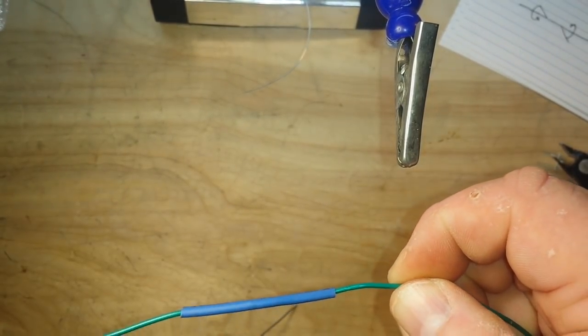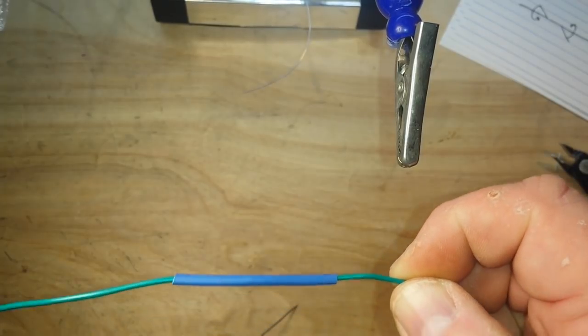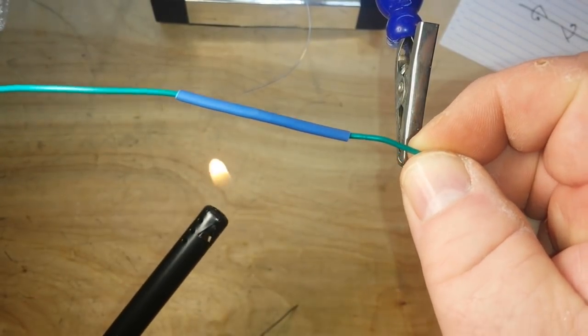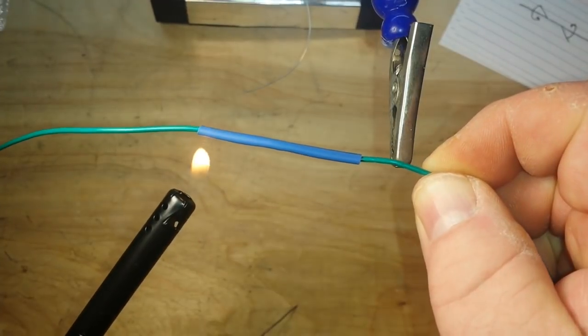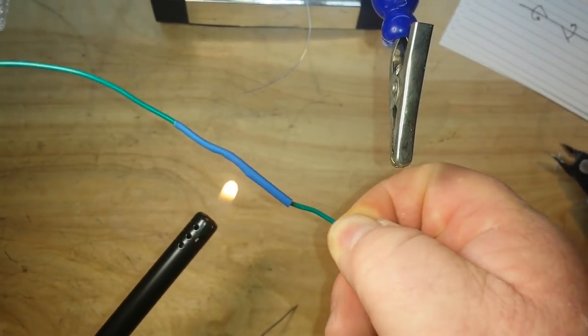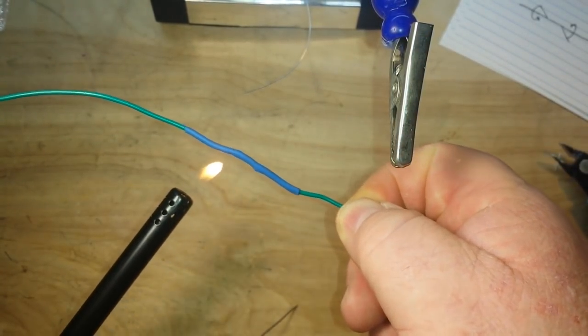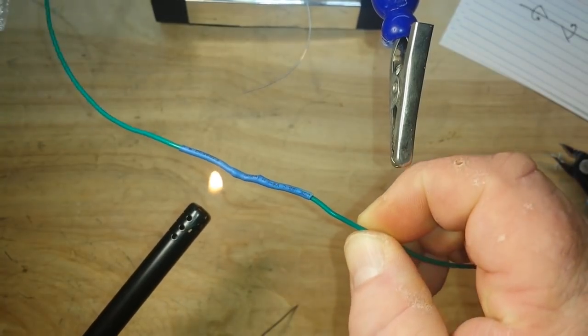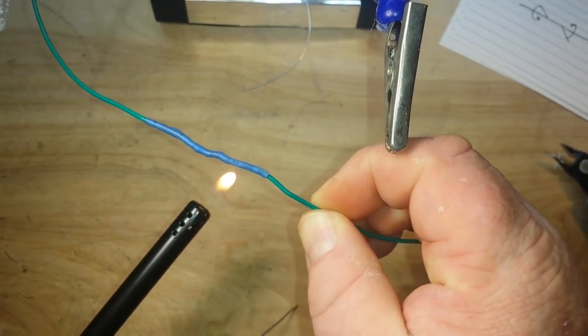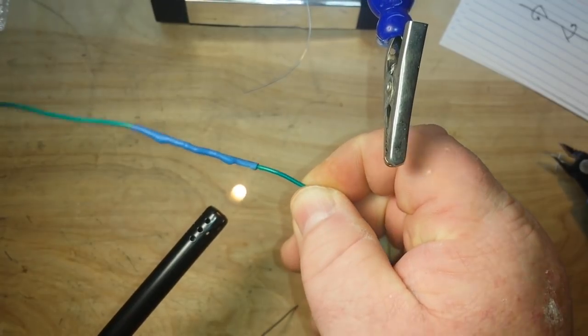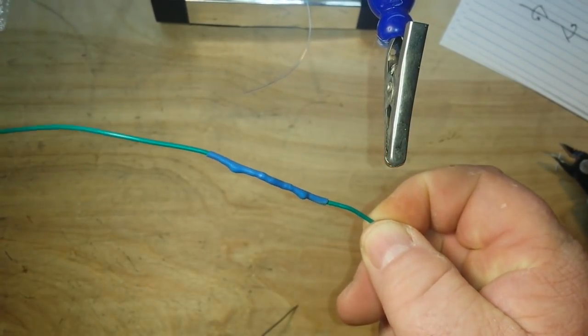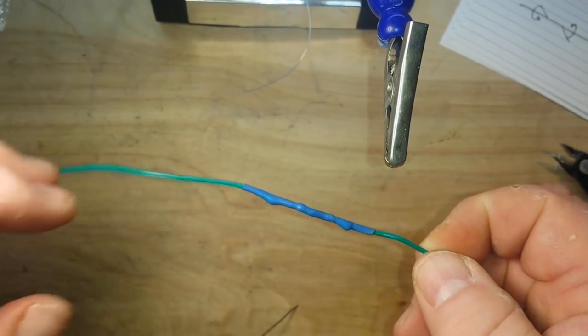We get that on there like that. Now the proper way to use heat shrink is with a heat gun. I don't have one here, so the lighter will have to do for us today. Don't put the heat shrink in the flame - this is about an inch above the flame. Just let the heat do the work, not the flame.